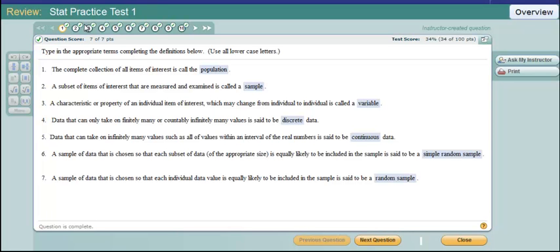The complete collection of all items of interest is called the population. A subset of items of interest that are measured and examined is called a sample. A characteristic or property of an individual item of interest which may change from individual to individual is called a variable.